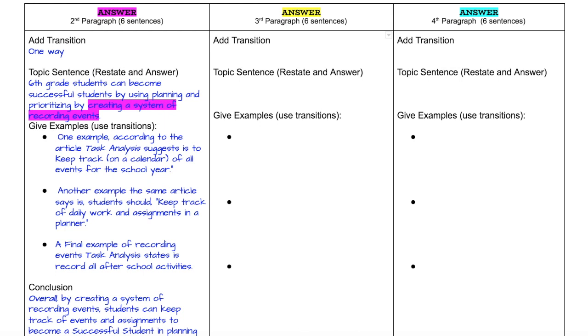The first thing that I need to do is transition into the next paragraph when I'm talking about my second paragraph, and it should say one way or one example or something that transitions into the idea that we're now sharing examples of how we become successful students. I use the transition one way.